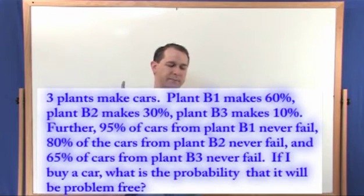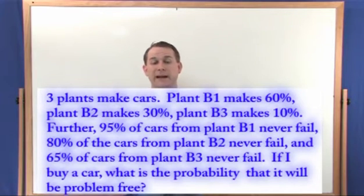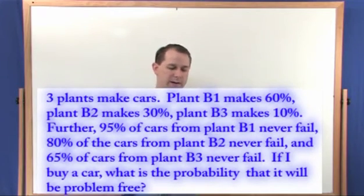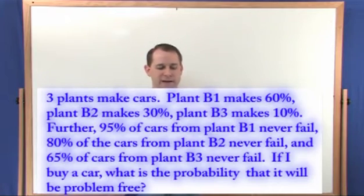So B1 makes 60%, B2 makes 30%, B3 makes 10%. Now, furthermore, we know that plant B1 has error-free cars or cars that never fail 95% of the time. Plant B2 has 80% of the cars that never fail. Plant B3, 65% of the cars never fail.